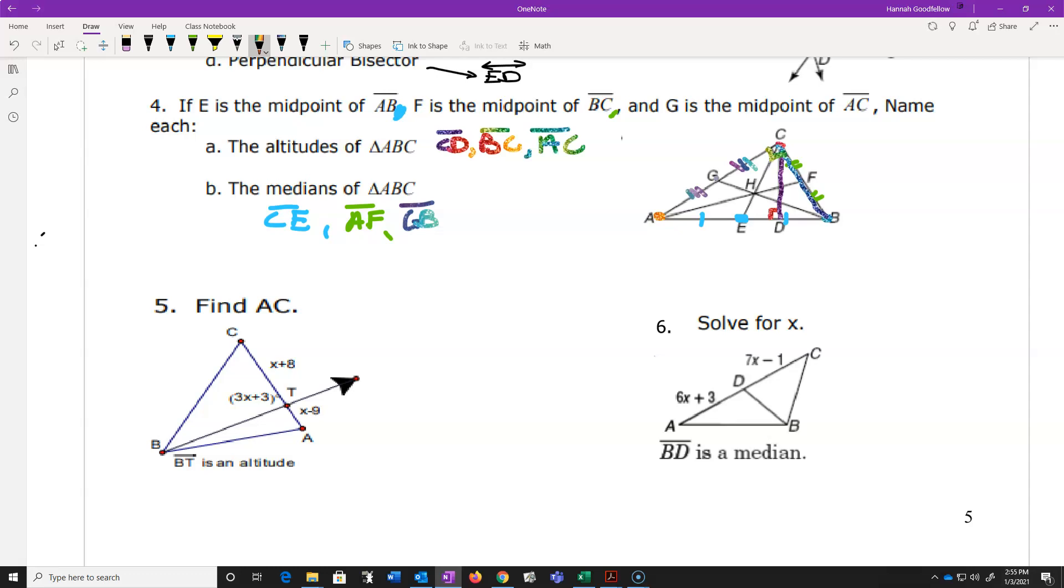And it also turns out that this one going from A goes down there and makes a right angle too. So it must be in the AC is an altitude as well too. But remember what you're trying to do, vertex to opposite side and make a right angle.